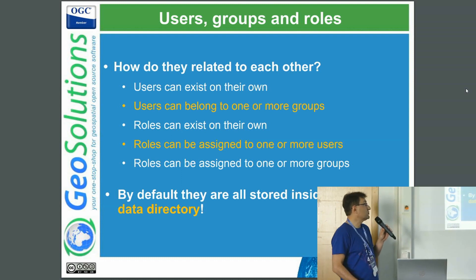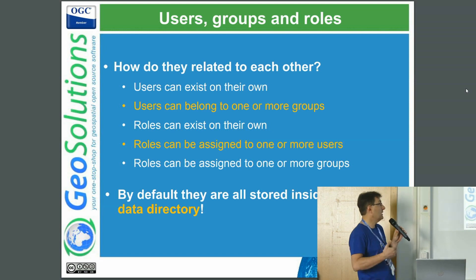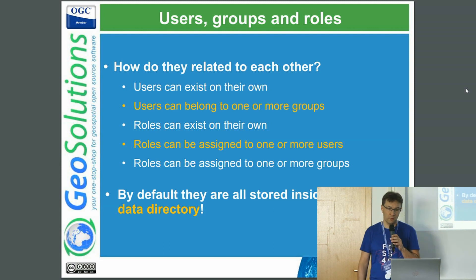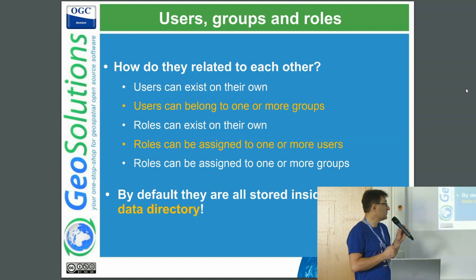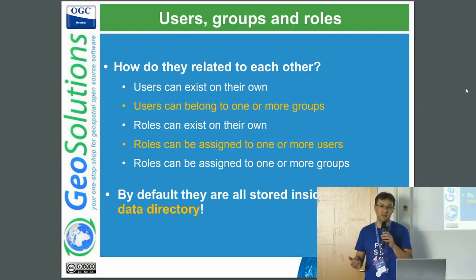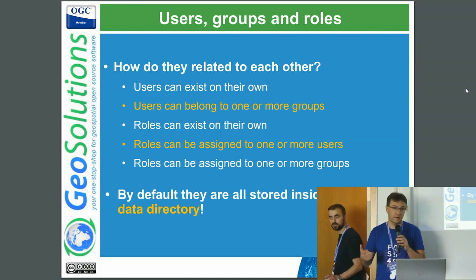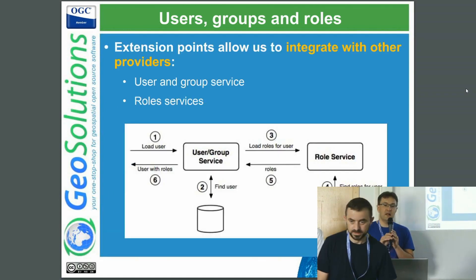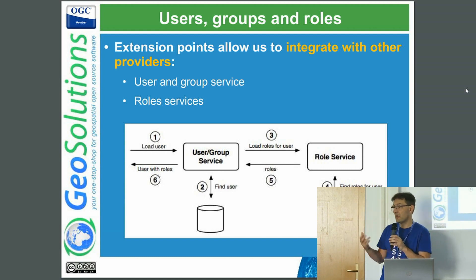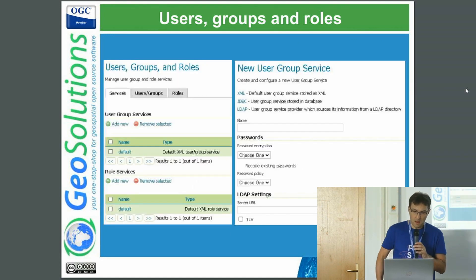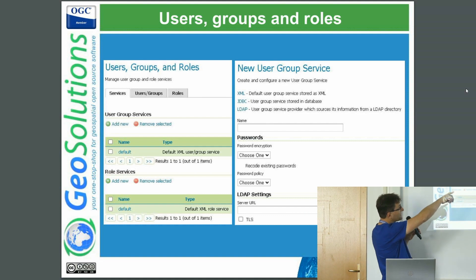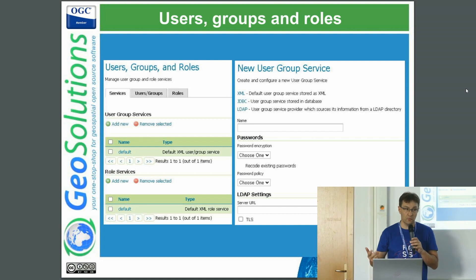For user groups and roles: users can exist on their own or be part of a group. Roles can exist on their own but are typically attached to either users directly or groups. By default, they are all stored inside the GeoServer Data Directory as XML, but you can choose other storage backends like a relational database, an LDAP server, and more — we have an extension point for that. Out of the box you get XML, JDBC, and LDAP, but you can write your own.